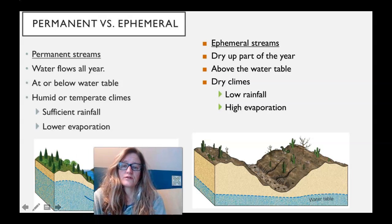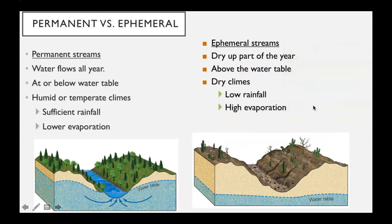Streams flow through their watersheds and are either going to be permanent streams or ephemeral streams. Permanent streams are those that flow all year — most streams on the East Coast flow all year. They're going to intersect the water table, so the groundwater flow is maintained in part by gaining water from underground aquifers. They have sufficient rainfall and stay in a humid to semi-arid climate with lower evaporation rates.